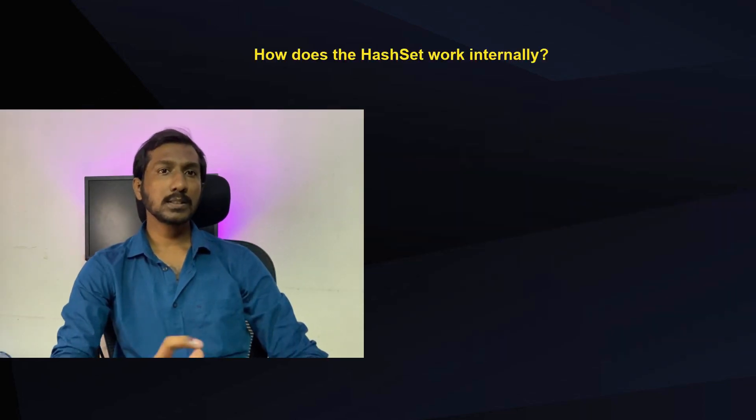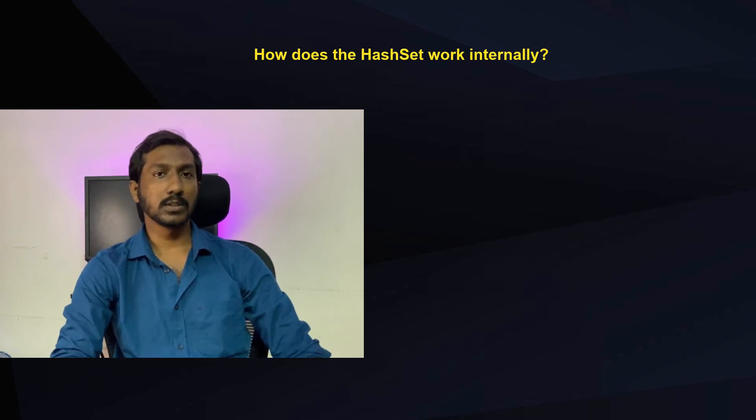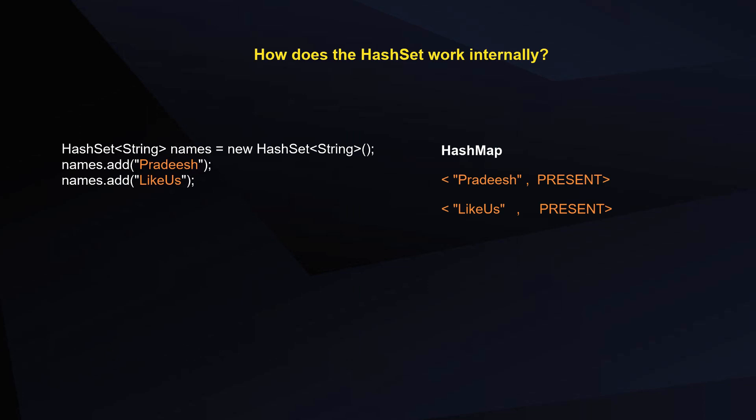How does HashSet work internally? HashSet internally uses a HashMap to store data. When you call names.add('Pradish'), 'Pradish' is stored as a key in the HashMap with a dummy value. Since HashMap keys must be unique, HashSet automatically maintains uniqueness — only unique items can be inserted.